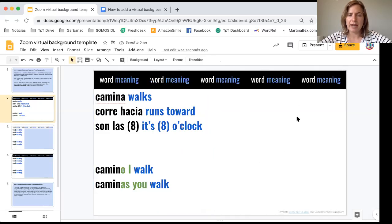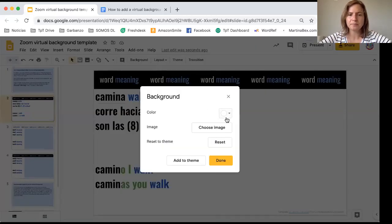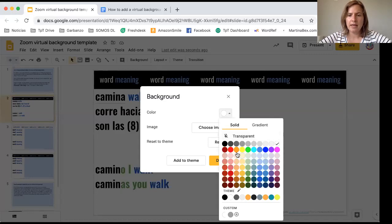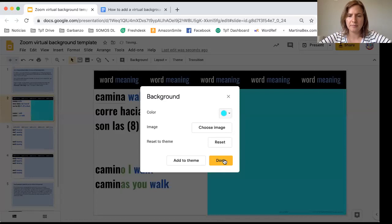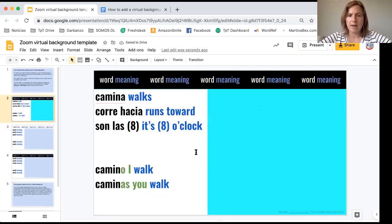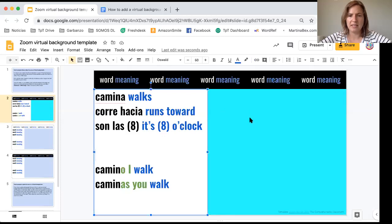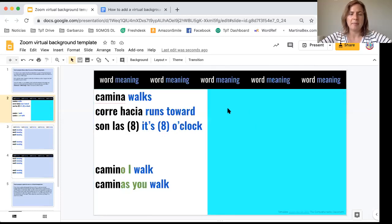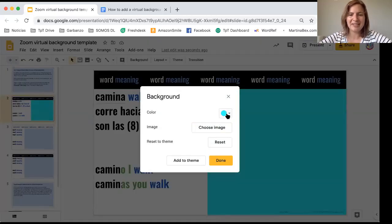On the right hand side you can change the background color so if you want your words to be separate from the background color it's really easy to change that. You just click on background and then color. And then whatever color you would want. If you wanted to you could change the color of this box as well if you wanted the whole thing to be different or you could make it transparent. But I do like having it all be white personally just because it looks more like a whiteboard.